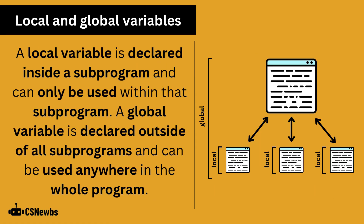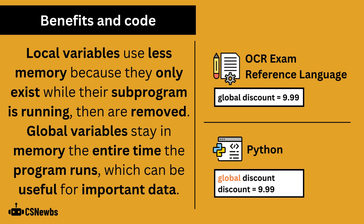There are two types of variables that you need to know. A local variable is declared inside a subprogram and can only be used within that subprogram. A global variable is declared outside of all subprograms and can be used anywhere in the whole program. Local variables use less memory because they are only created when their subprogram is called and removed when the subprogram ends. Global variables stay in memory the entire time the program runs, which uses more memory but is useful for important data.